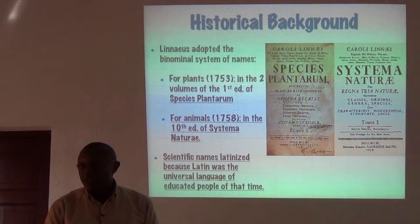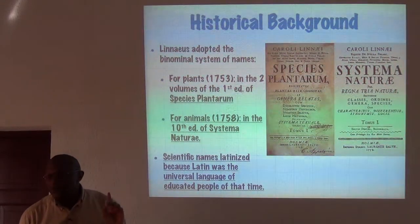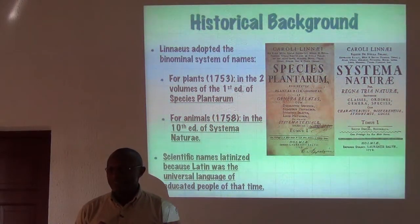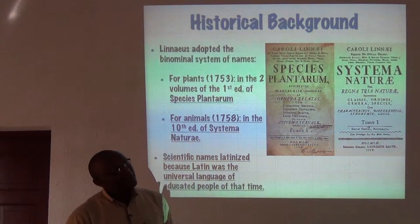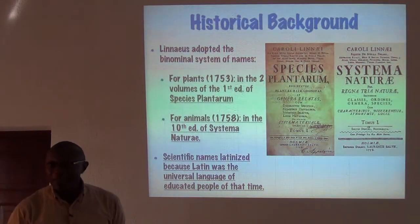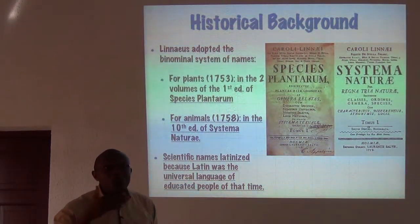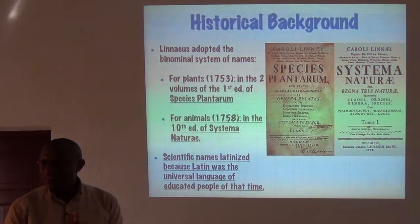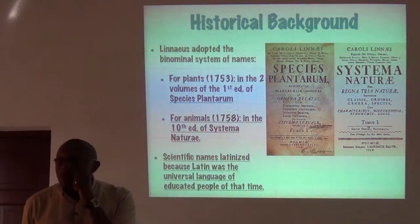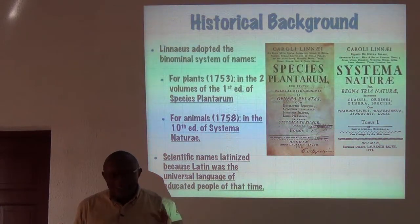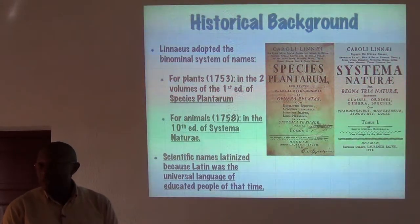However, Linnaeus was not the first person to actually use binomial nomenclature. Two brothers — Caspar and Johan Bauhin — about 200 years before him had actually proposed and used binomial nomenclature, but they were not consistent in their use of that system. Linnaeus acknowledged them very much by naming a genus of plant after them, clearly recognizing their contribution to this effort.